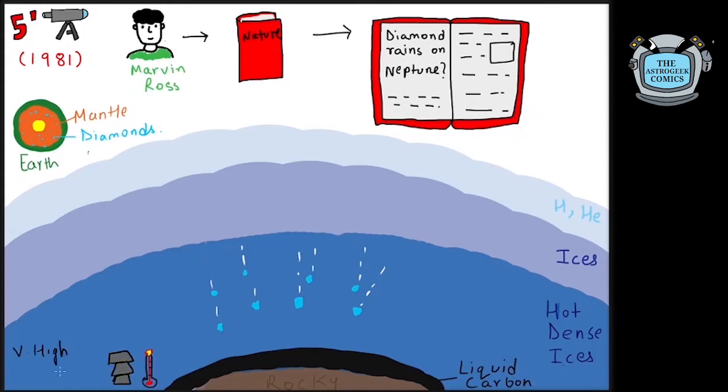A mysterious state of carbon that has hardly been studied. There might be diamond rocks floating on this layer of liquid carbon. There may be other allotropes of carbon formed too, like graphite and fullerenes.